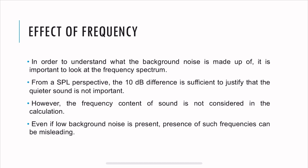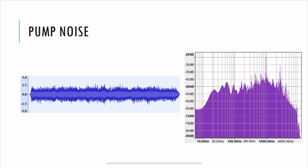But we never considered the frequency spectrum, which is important in this calculation. Even if background noise doesn't add up to the SPL criteria, it can have a totally different frequency spectra, which can be misleading. Here's a recording of a pump noise — you can listen to it. By listening, it's clear that it has some tonal components and is predominantly in the high frequency range.